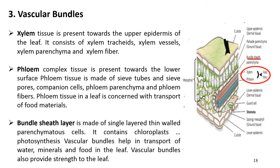Each vascular bundle consists of xylem and phloem complex tissue surrounded by a bundle sheath. Xylem tissue of a vascular bundle is present towards the upper epidermis of the leaf. It consists of xylem tracheids, xylem vessels, xylem parenchyma, and xylem fibers. Xylem in a vascular bundle is concerned with the transport of water and minerals.